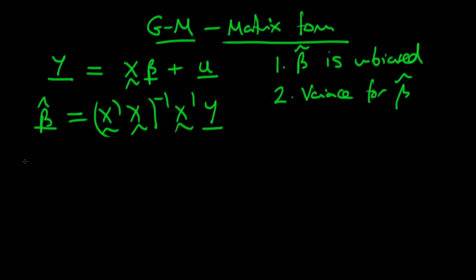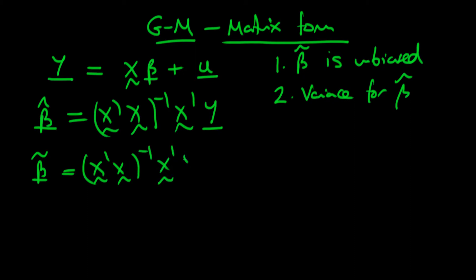To form our estimator beta tilde, let's say that beta tilde is equal to our least squares estimator — x-prime x to the power minus 1 times x-prime y — plus some extra term d times y, where d is some matrix.